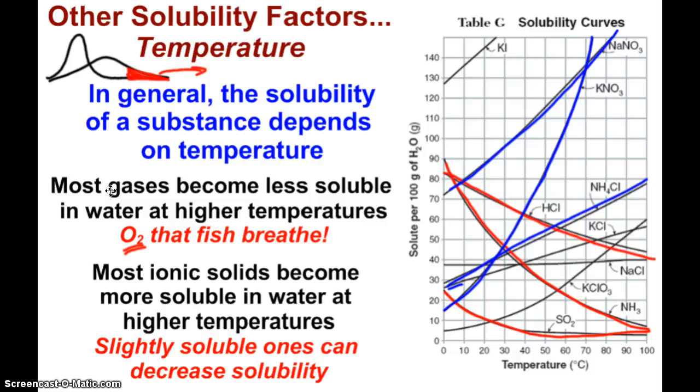Think ionic compounds that are slightly soluble, that we'll look at next semester when we start talking about KSP, those are the ones that we can see a decrease in solubility.